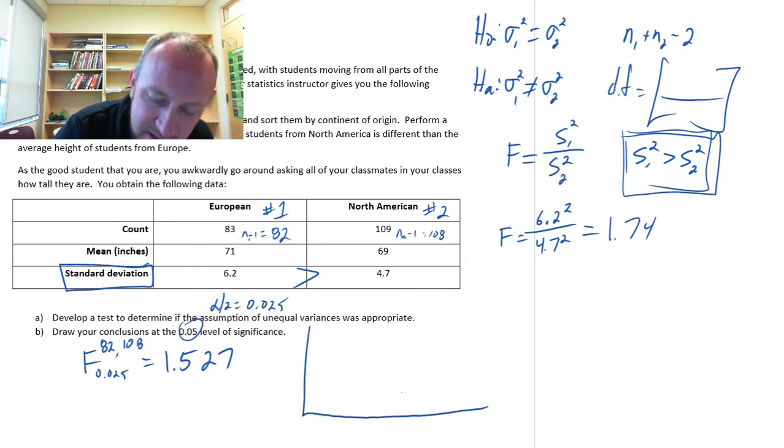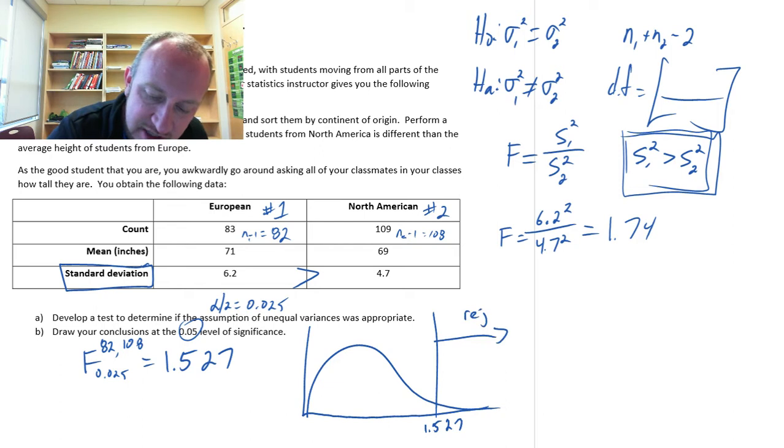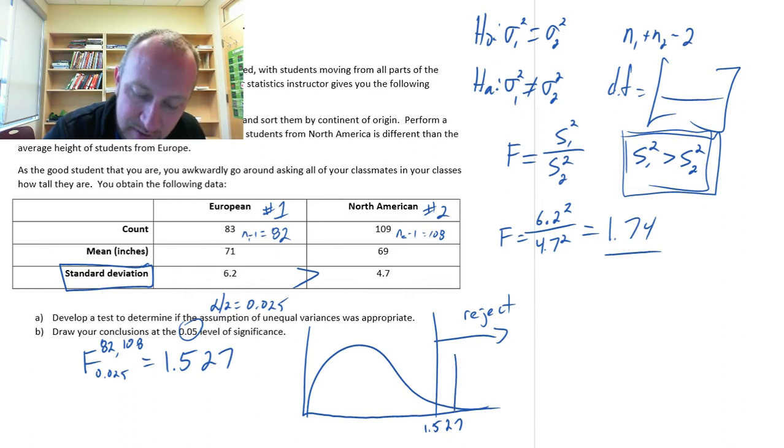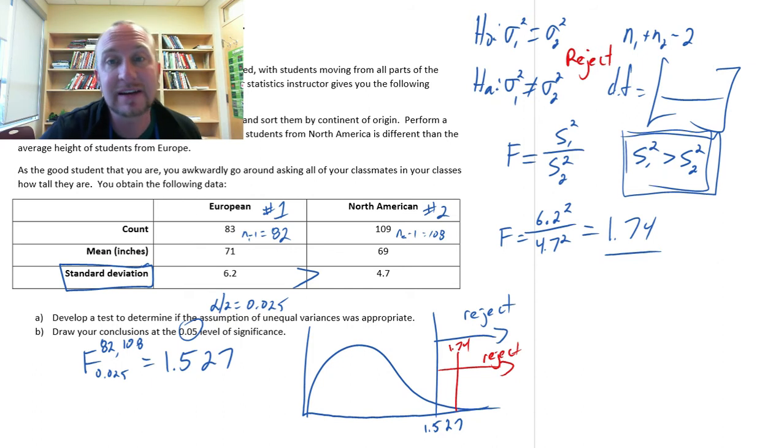Keep in mind what this means. There's that distribution, something like this. We have our critical value is 1.527, and that defines our rejection space. Our test statistic we calculated as 1.74, so it's somewhere out here. We have 1.74 out here, so that is in that rejection space. We can comfortably reject that null hypothesis and say yes, we were correct in assuming unequal variance because our evidence supports the statement that those variances are not equal.